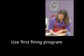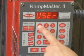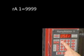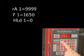For this initial firing, we will use the first firing program and require only one segment. Writing down the information will allow us to know what we need to enter as the computer asks specific questions. The first program means user one. One segment: the rate of climb is 9999, which tells the kiln to heat up as fast as possible. The first temperature is 1650 — this is our set temperature. Hold one equals zero; we do not want to soak at this temperature for any time.